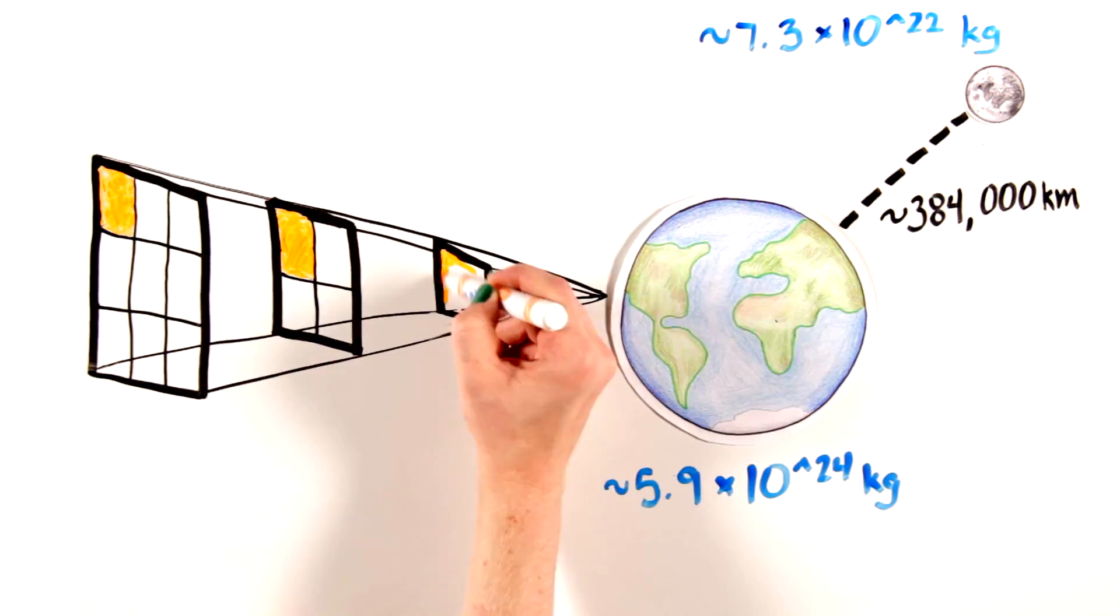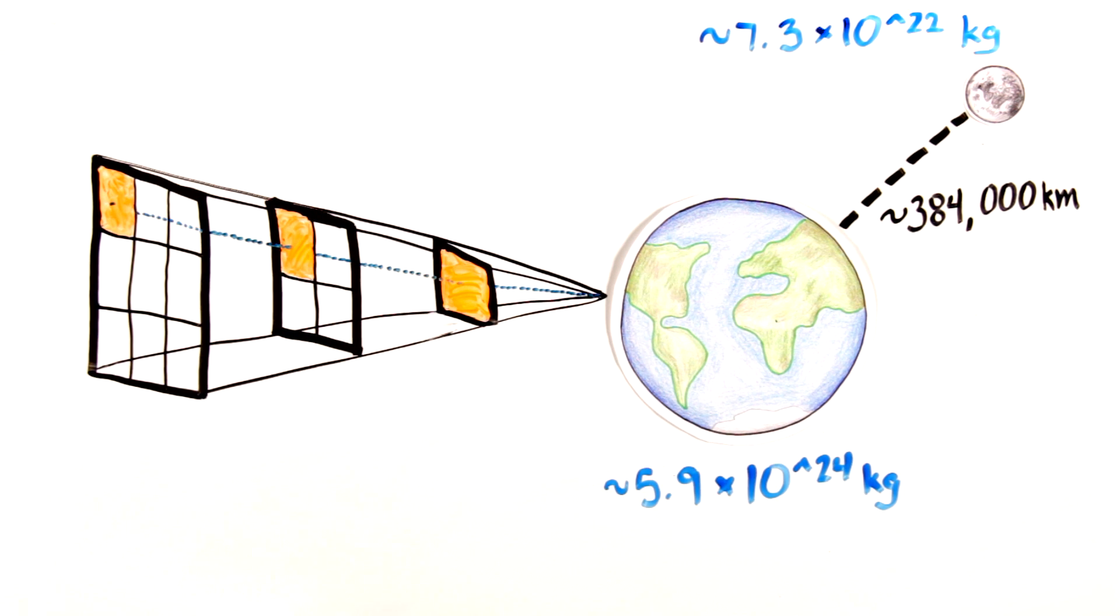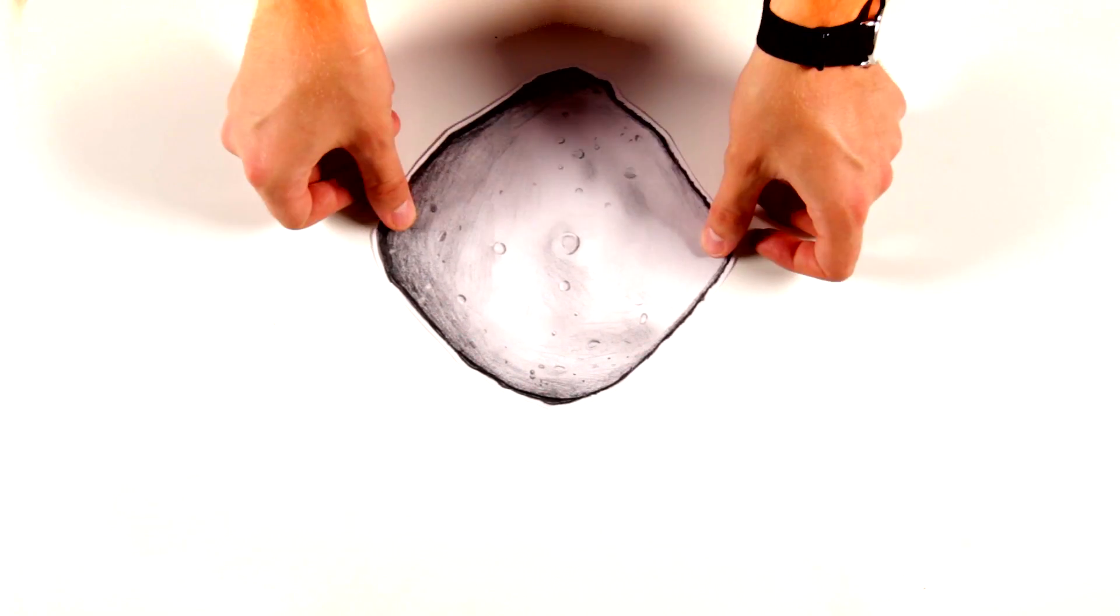Gravitational force follows an inverse square law, meaning that the strength of the force decreases as the square of the distance increases.